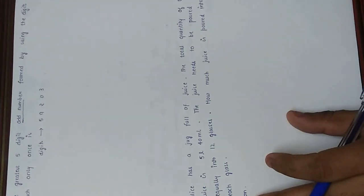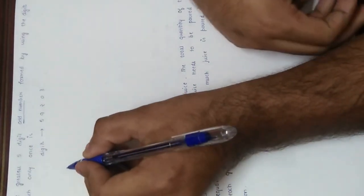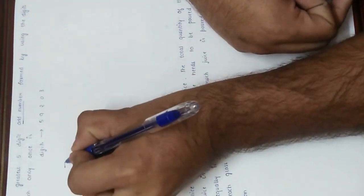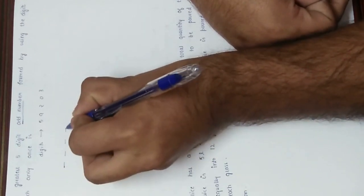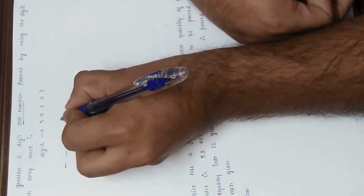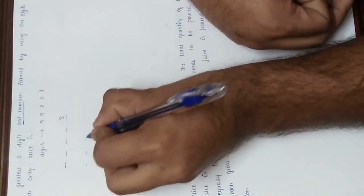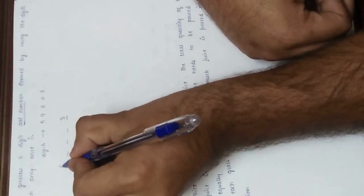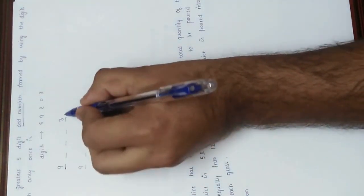But the condition here is we have to create the greatest five-digit odd number, and odd numbers are those which cannot be divided by two. Our approach will be: first, create five placeholders. At the units place we can write either 3 or 5, and since it's the greatest number, the first place will always have 9.